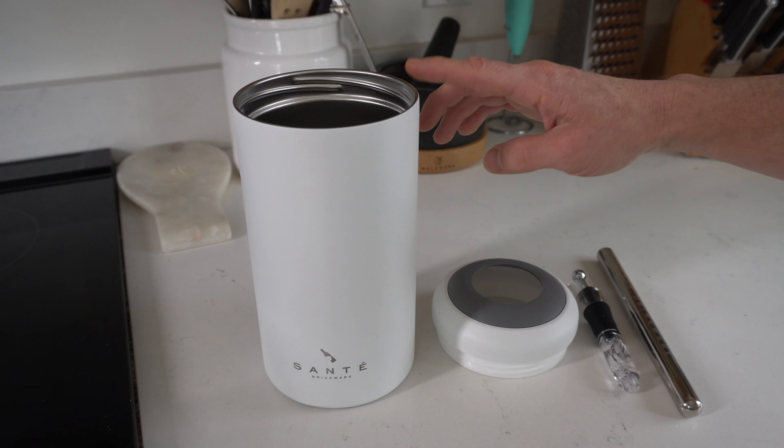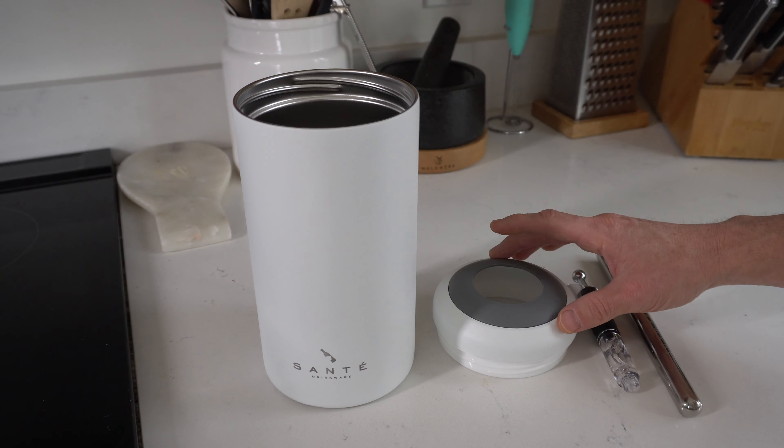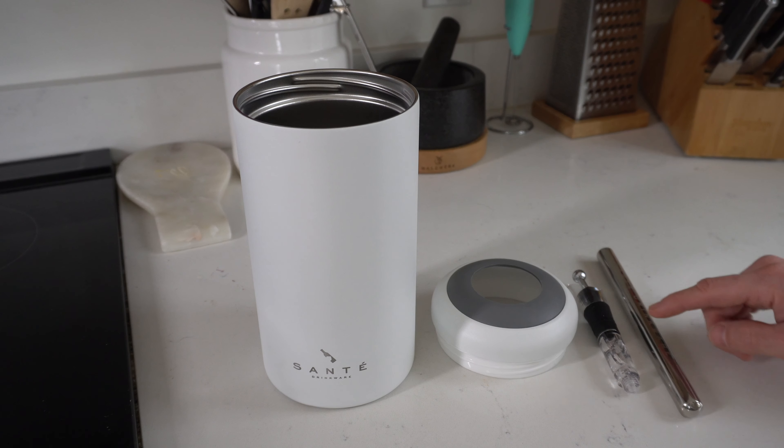So out of the box, these are all the pieces. Up here we've got our main wine chiller base along with the twist lock lid. We've got the aerator pour spout and then the chill stick.